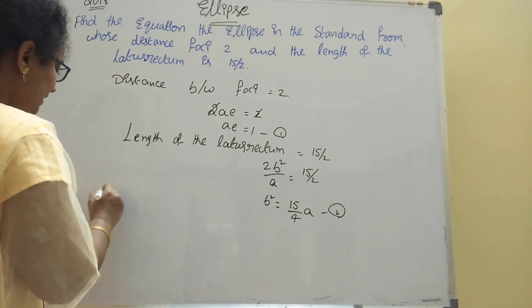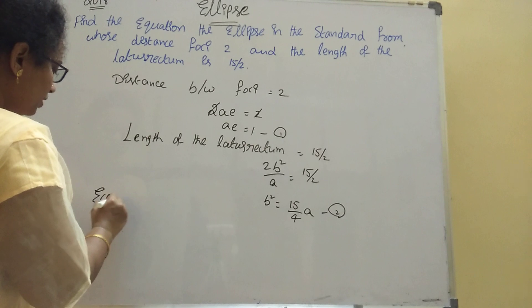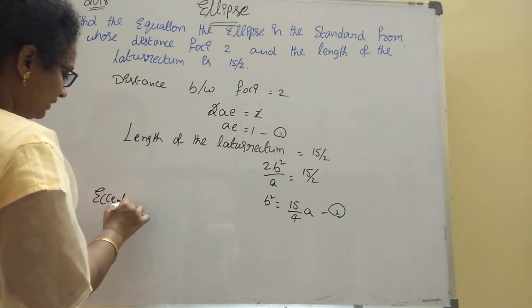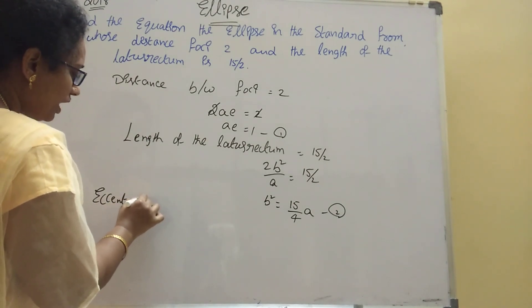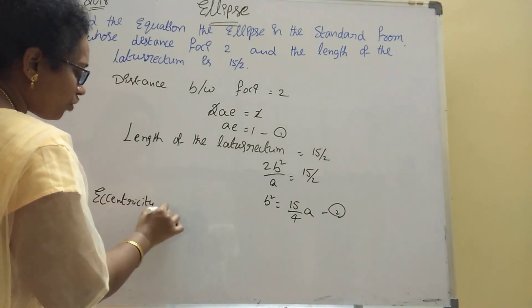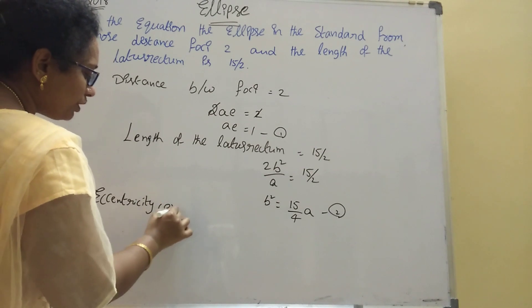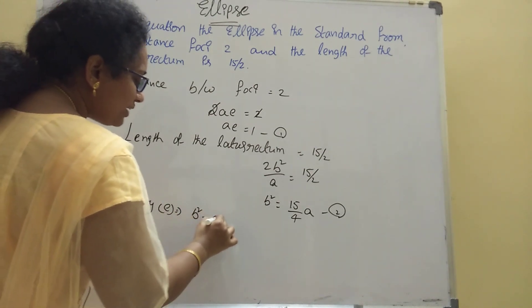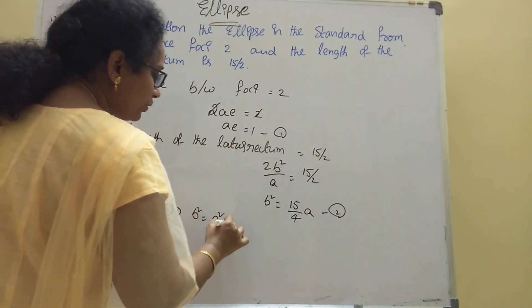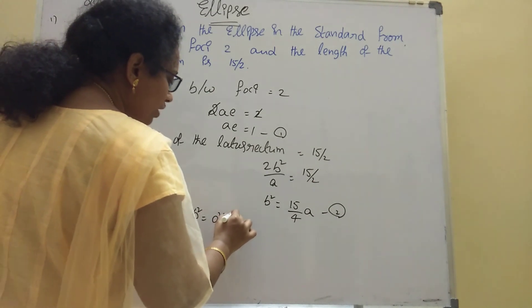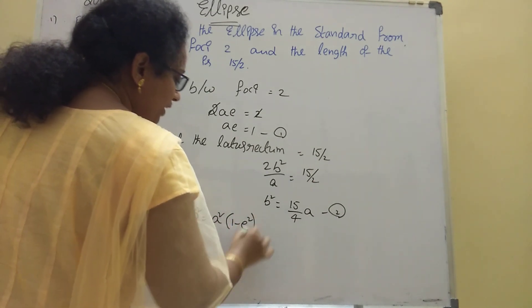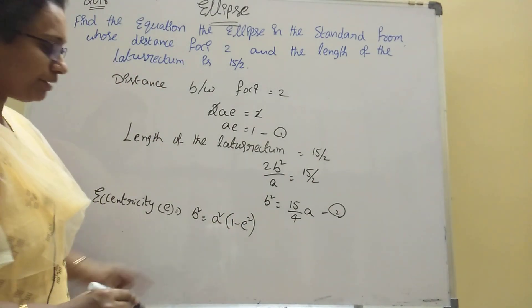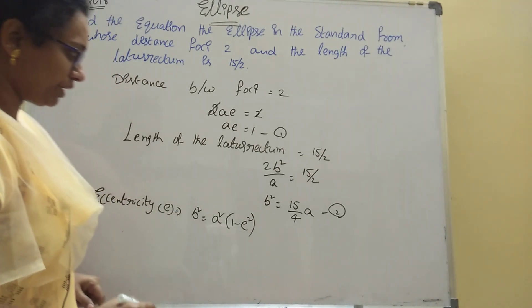Apply the eccentricity formula. We have b² = a²(1 − e²). This is the formula: b² = a²(1 − e²).